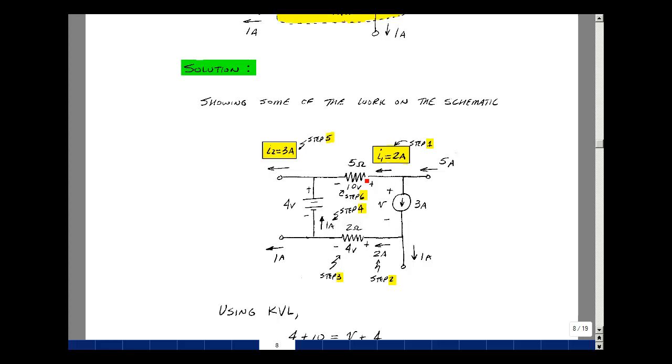And lastly, I've got 2 amps flowing in this 5 ohm resistor. By Ohm's law I get 5 times 2, or 10 volts.